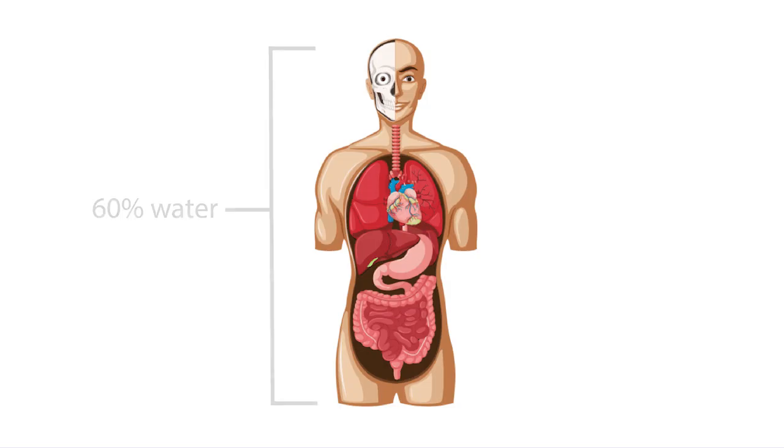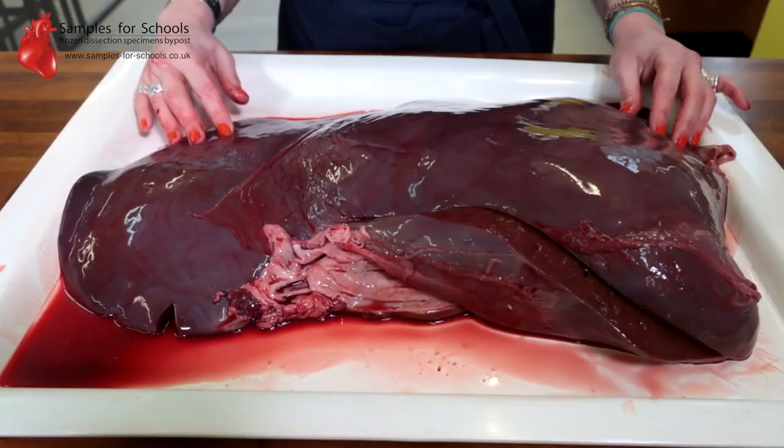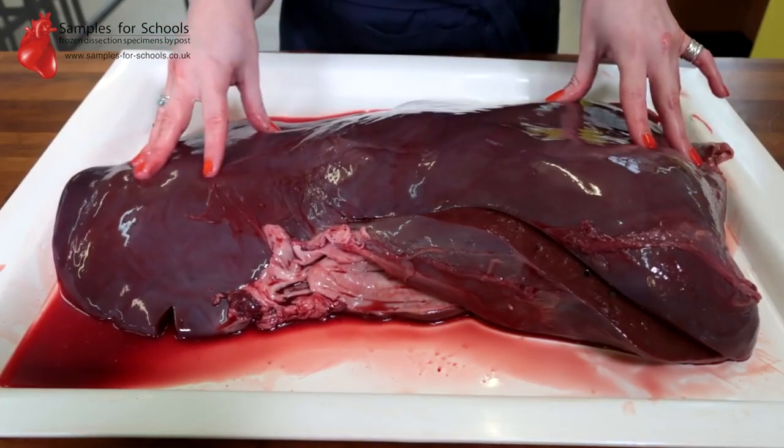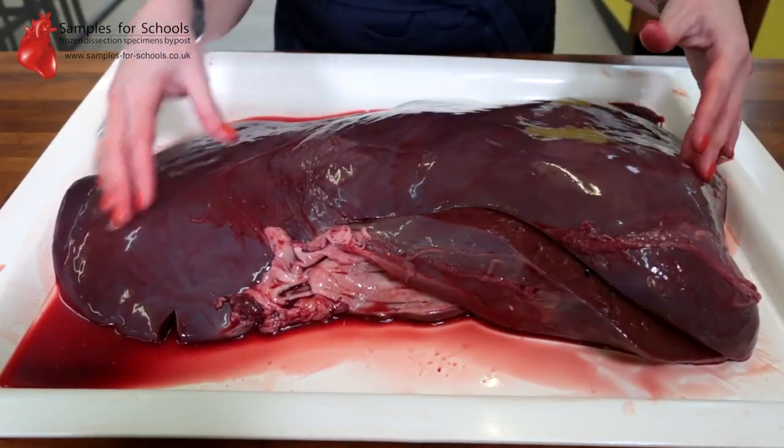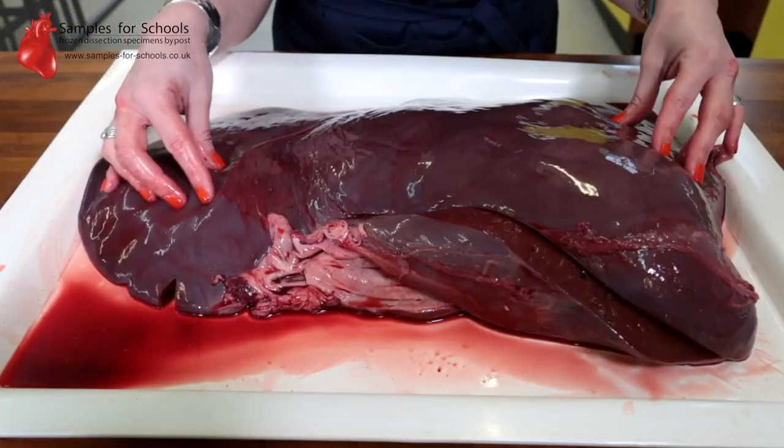With the human body being 60% water, there is a considerable amount of water in your soft tissues and organs. This water in your organs evaporates into gaseous water vapor, causing your skin and organs to expand.